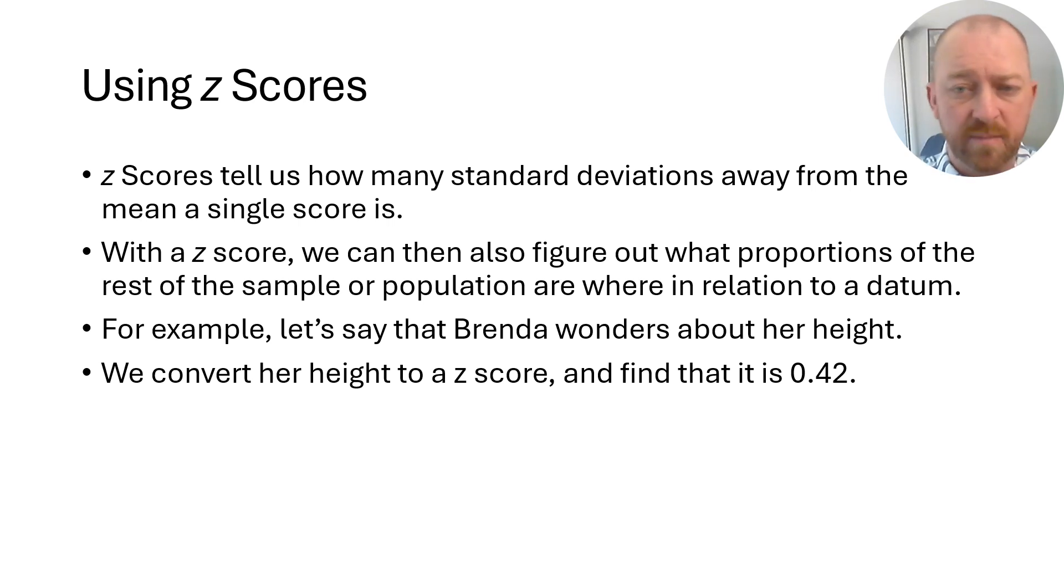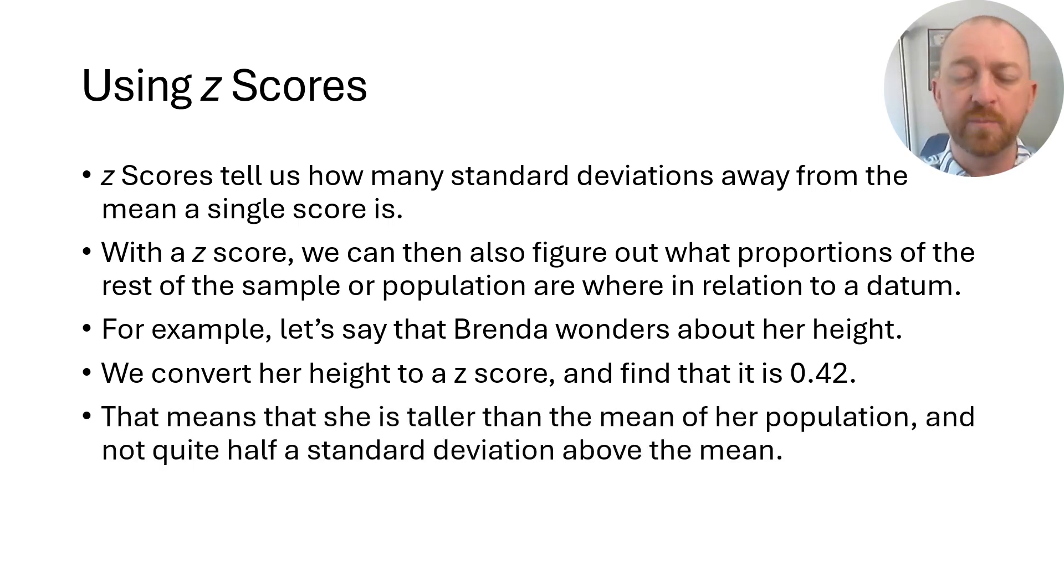A couple of things we can know immediately from that z-score. A z-score of 0.42 means that she is taller than the mean of her distribution. If she were exactly the mean of her distribution, her z-score would be zero. But because it's a positive z-score, that means that she scored above the mean of her population. We can also see just how far away from the mean she is in terms of standard deviations. She is 0.42 standard deviations above the mean of her population.